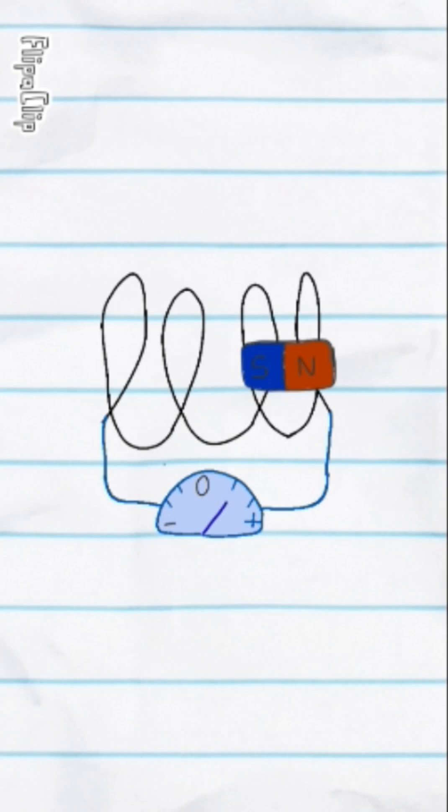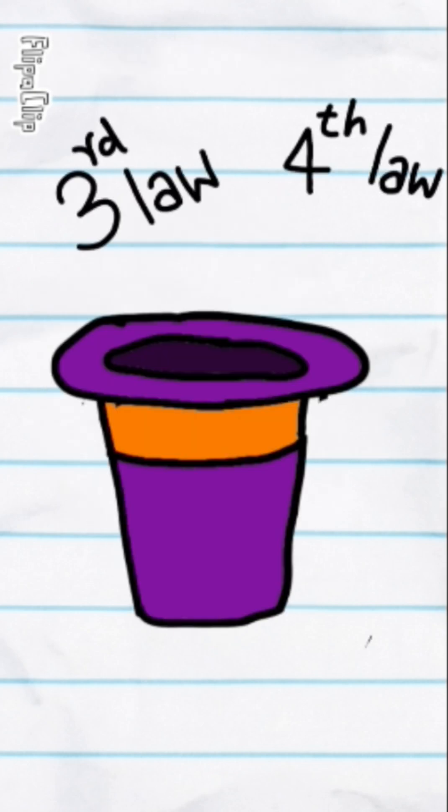Third law: a moving electric field creates a magnetic field. Fourth law: a moving magnetic field creates an electric field.